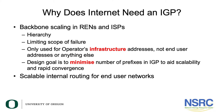Why does the Internet need an IGP? IGPs are needed for backbone scaling in RANs and ISPs. They provide hierarchy, limit the scope of failure, and are only used for infrastructure addresses — not end-user addresses or anything else. The design goal of IGPs is to minimize the number of prefixes to aid in scalability and provide rapid convergence. IGPs also provide scalable internal routing for end-user networks.